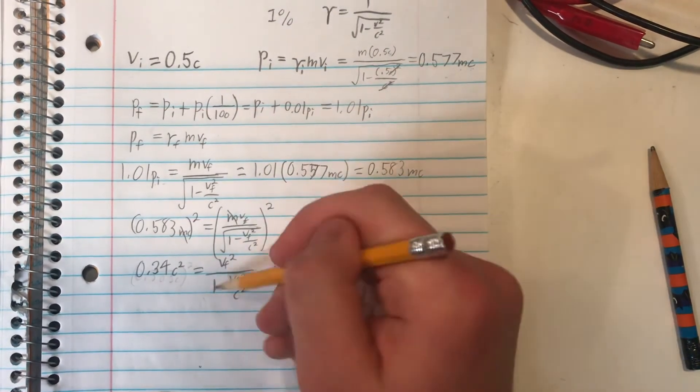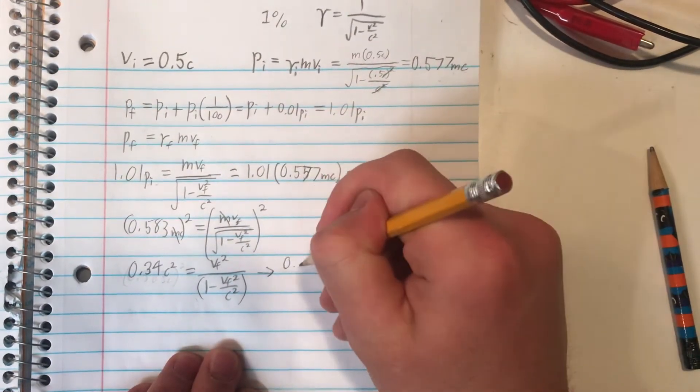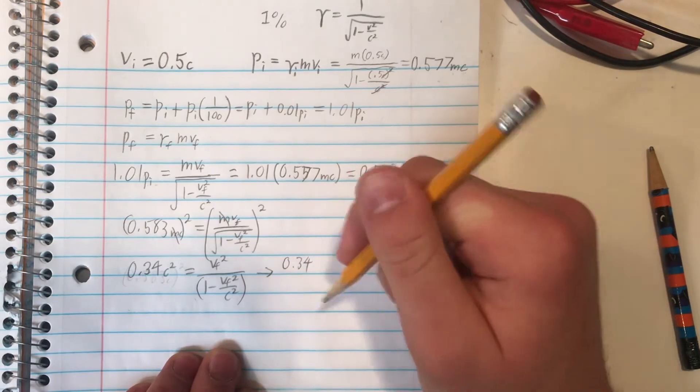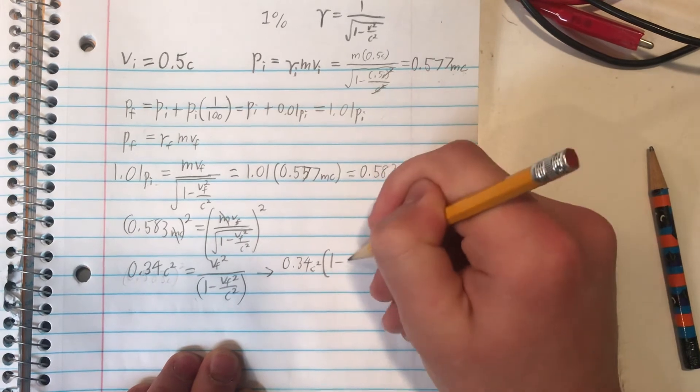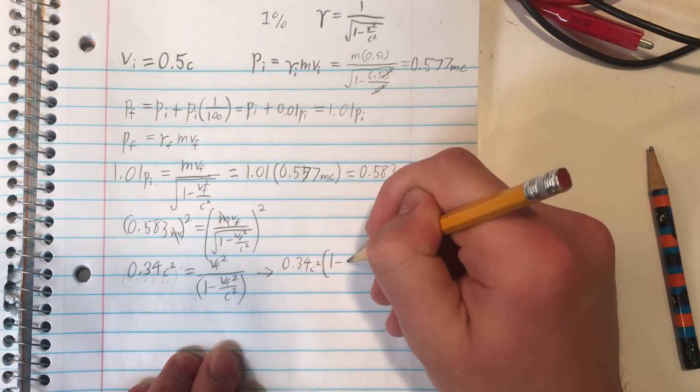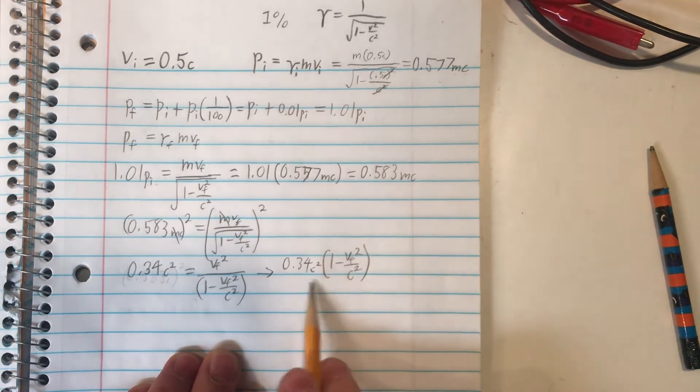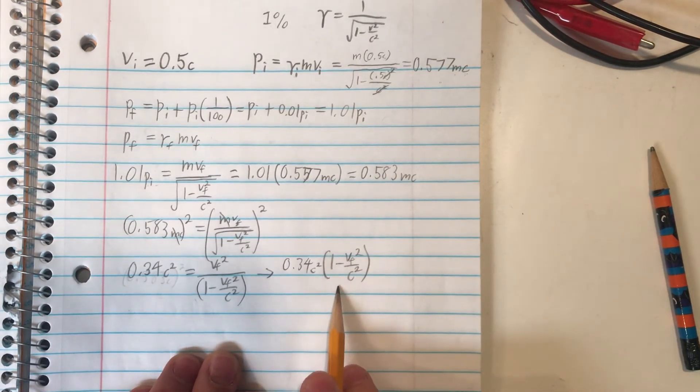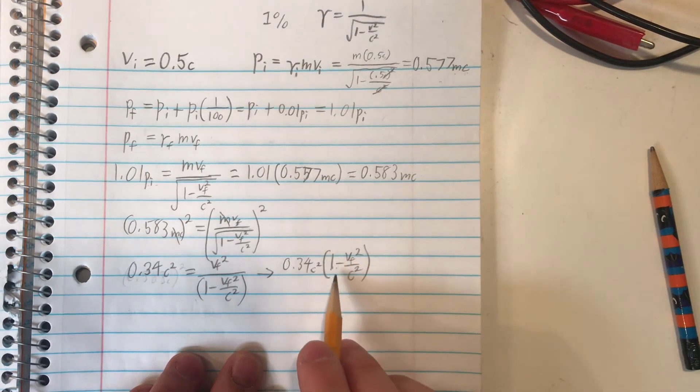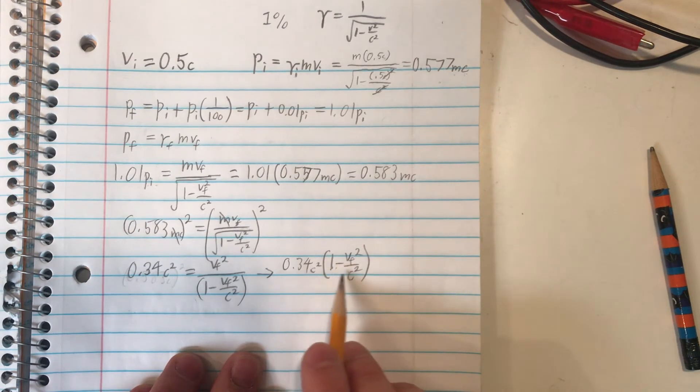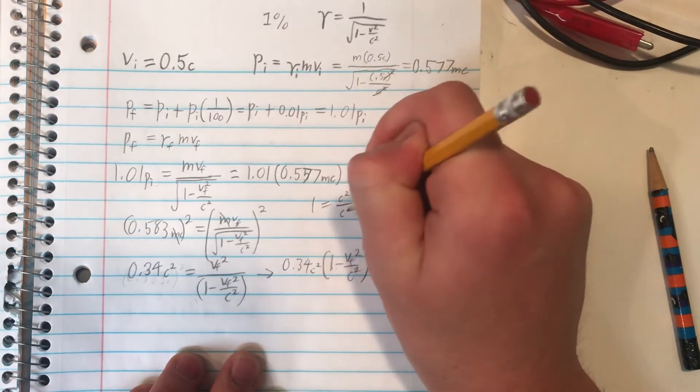Now we can multiply both sides by this big term at the bottom here to simplify further. So that's equal to about 0.34 c squared times 1 minus vf squared over c squared. This doesn't make it very easy to simplify though. So one way we can rewrite it is to consider the fact that since we have a 1 here, we can get both terms to have the same denominator if we think of 1 as equal to c squared divided by c squared.